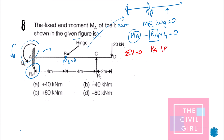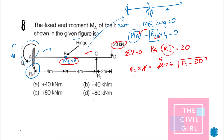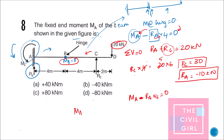Equating all vertical forces: RA plus RC equals 20 kN. To find RC, equate moment at B equal to zero from the right side, giving RC equals 30 kN. Therefore RA equals 20 minus 30 equals minus 10 kN. Substituting back: MA equals RA × 4 equals minus 10 × 4 equals minus 40 kN·m. The answer is option D.